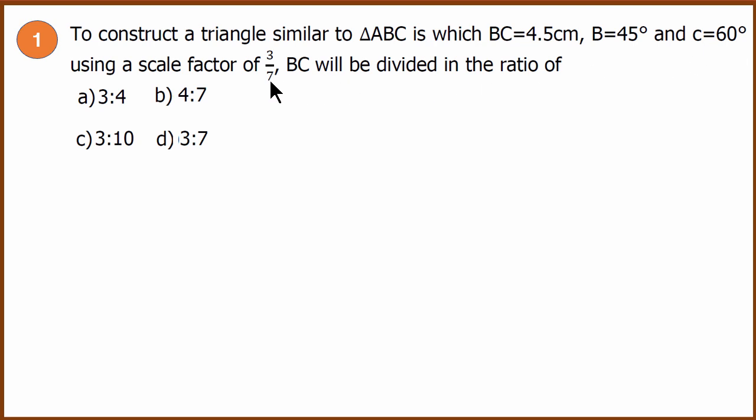And we know that the scale factor of the new triangle is 3 divided by 7, which means the new triangle is smaller than the ABC triangle. Question is, in what ratio will we have to divide BC?